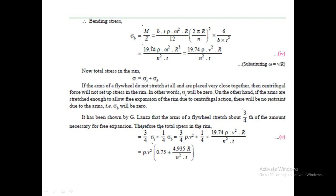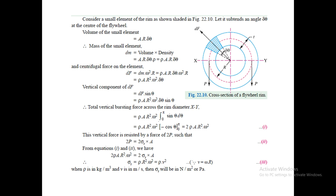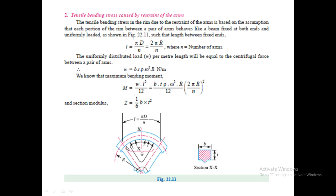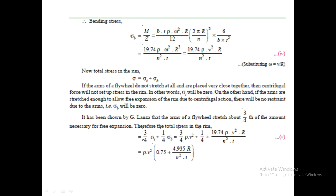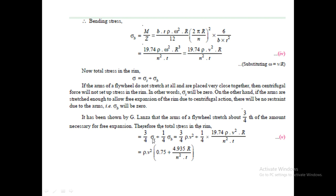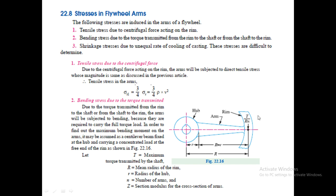Having calculated tensile stress σ_t and bending stress σ_b, the total stress in the rim is σ_t + σ_b. The shrinkage stress is taken as zero since it cannot be calculated; instead a factor of safety is applied. If the arms are very far apart, σ_b approaches zero; if very close, σ_t approaches zero. For optimum spacing, we consider three-quarters of the tensile stress and one-quarter of the bending stress.